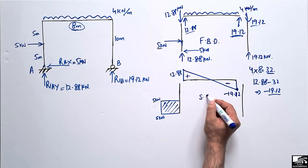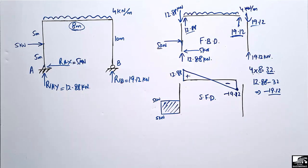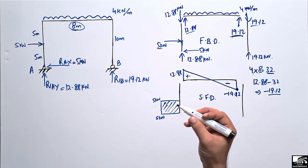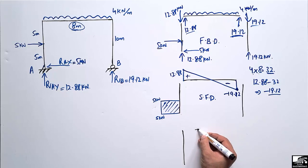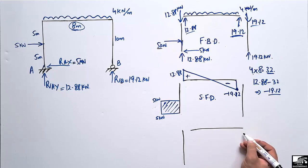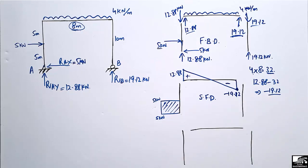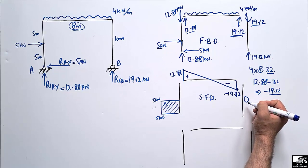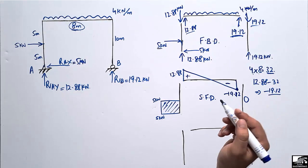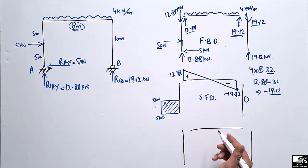There is no shear force acting on the right column, so the shear force diagram for that column is zero. Now we proceed to draw the bending moment diagram.